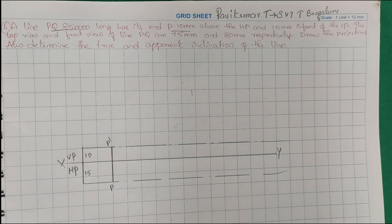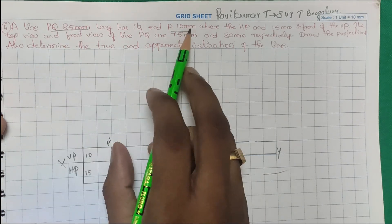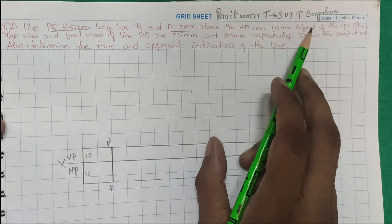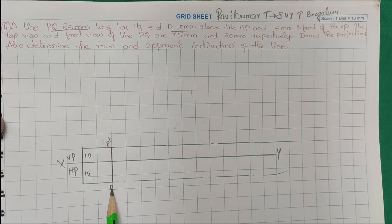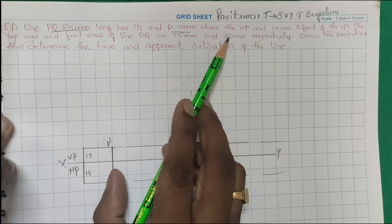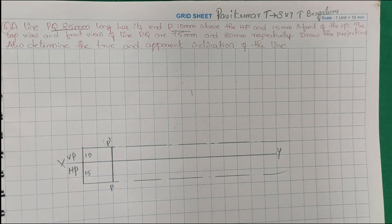Line PQ is 85mm long and P is 10mm above HP and 15mm in front of VP. The top view and front view of the line PQ are 75mm and 80mm respectively. Draw the projection and also determine the true and apparent inclination of the line.